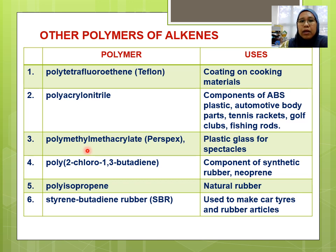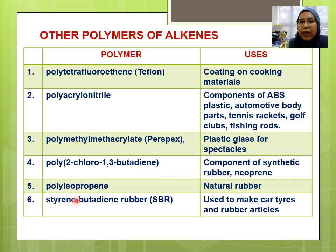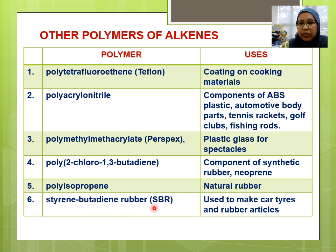Polymethyl methacrylate — Perspex — is a plastic glass used in eyeglass lenses. Poly(2-chloro-1,3-butadiene) is a component of synthetic rubber called neoprene. Polyisoprene is a natural rubber that comes from alkene. Styrene-butadiene rubber, SBR, is another example. These are all examples of polymers made from alkenes.